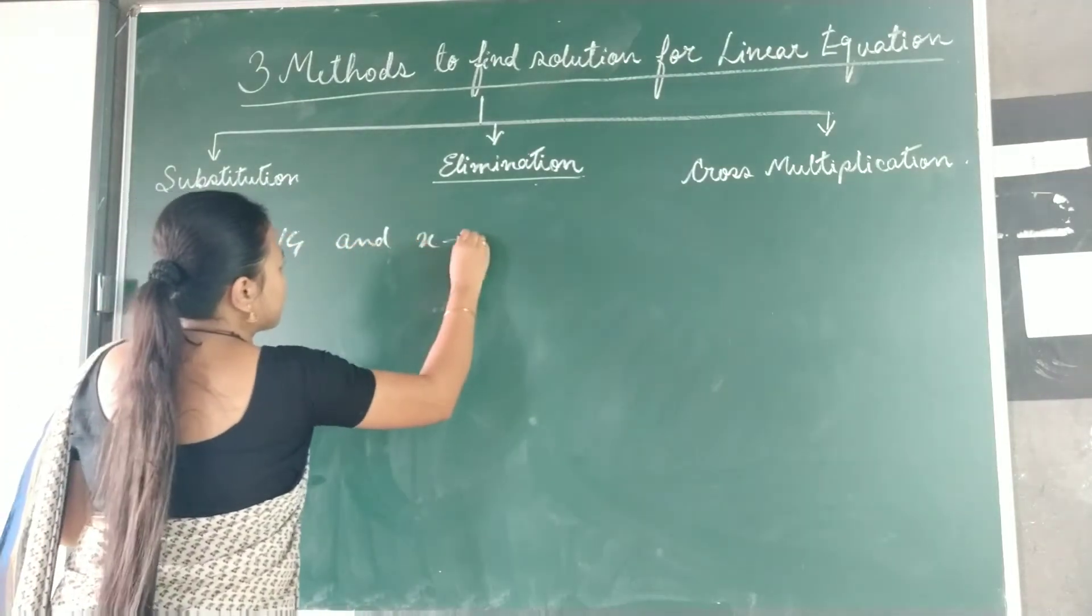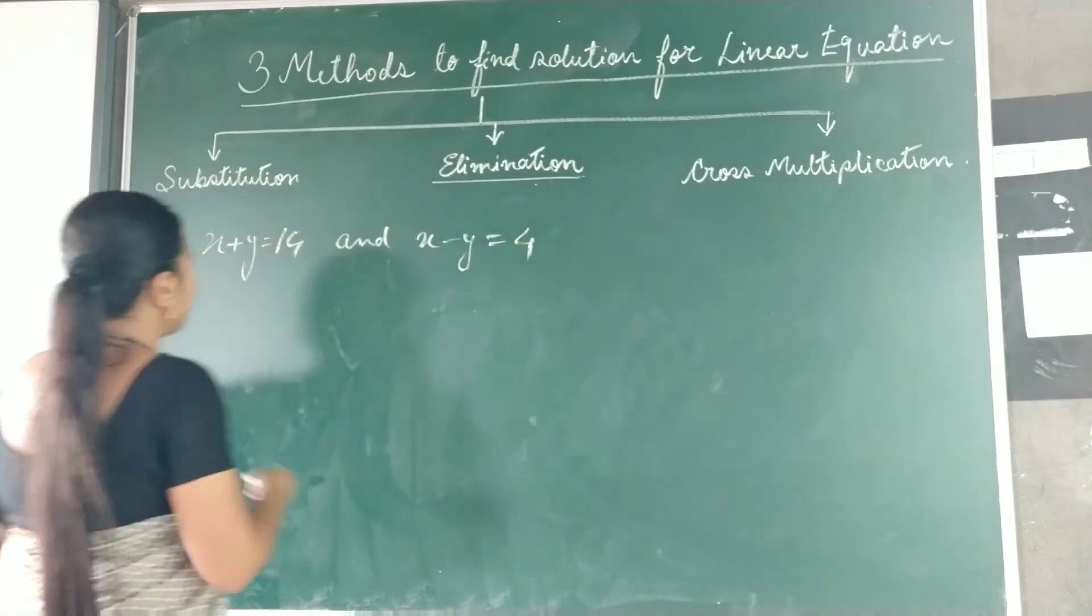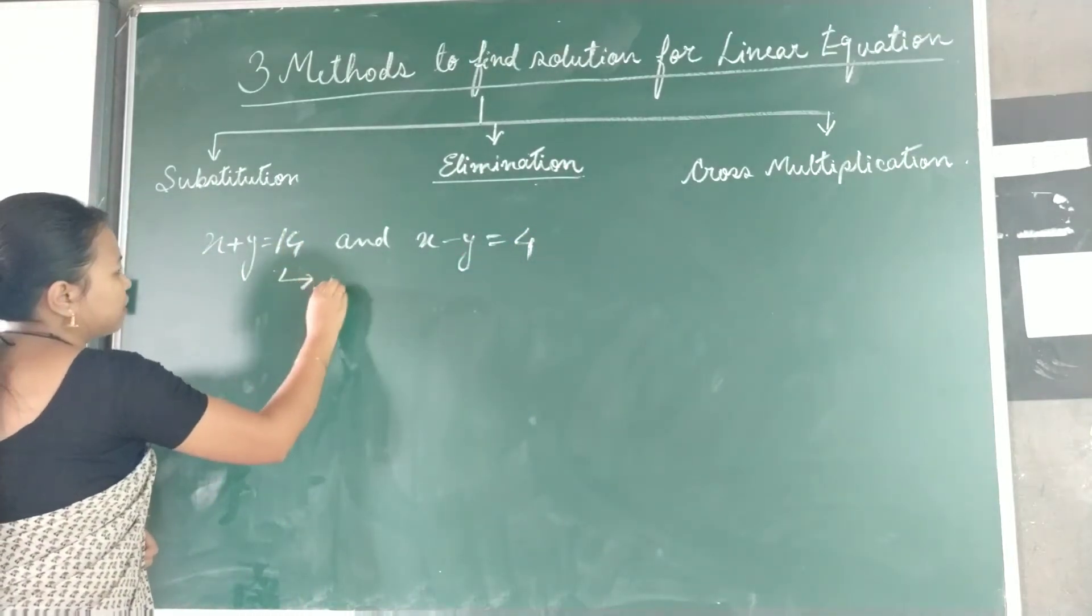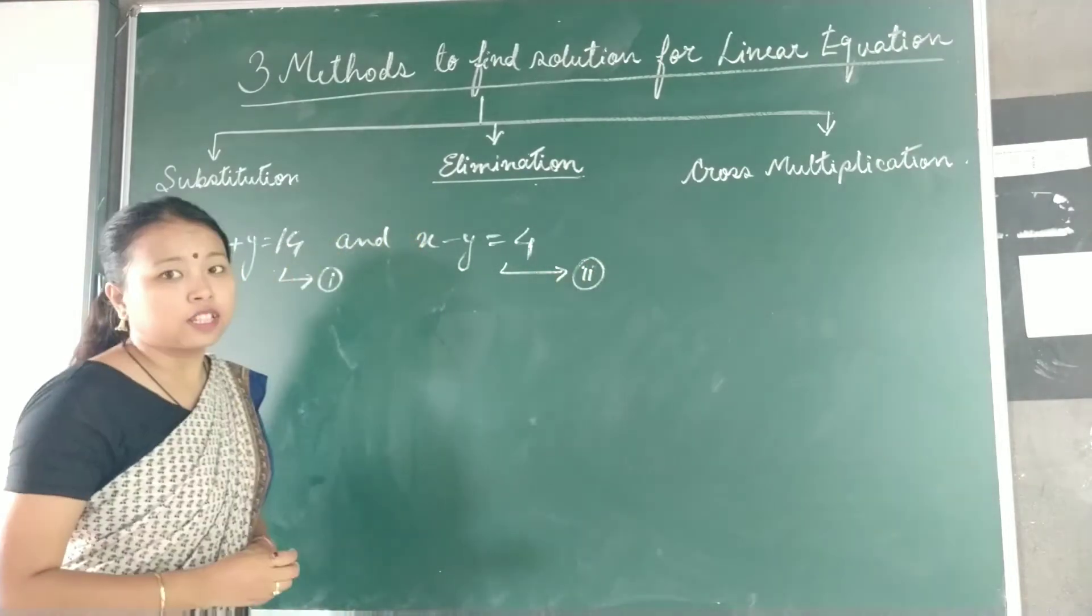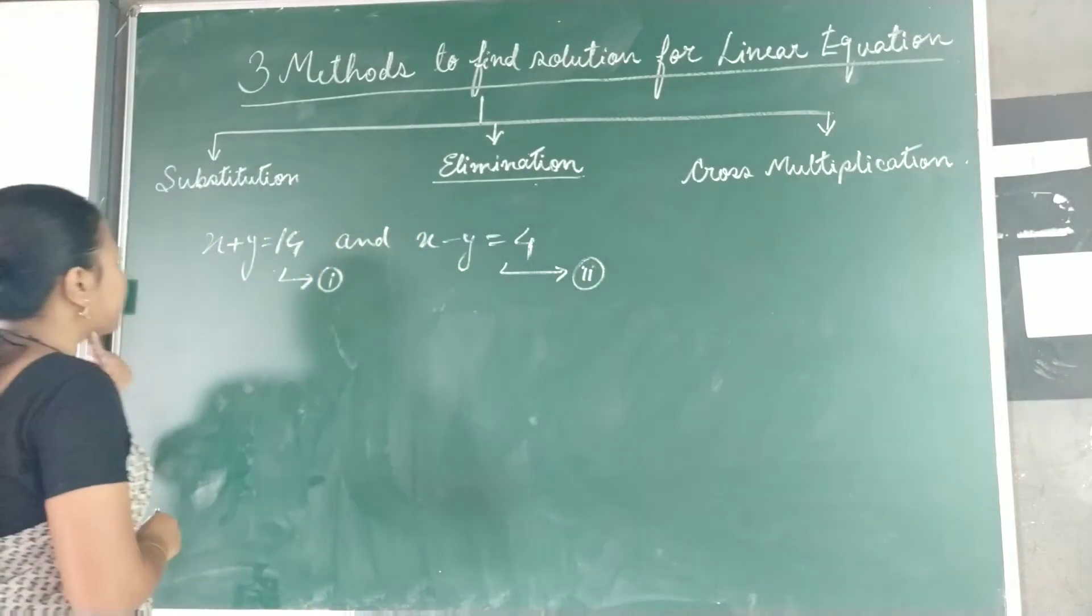Here I have to eliminate the variable. I am putting the first equation as equation 1 and the second equation as equation 2.